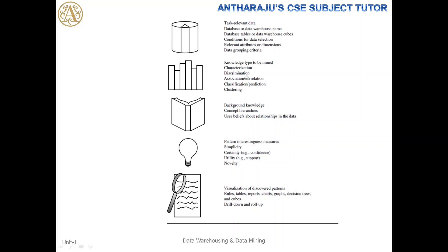Once task-relevant data is in place, the next primitive is knowledge to be mined — which sort of knowledge representation should be used, such as characterization, discrimination, association, or classification. Background knowledge provides a reference to the user and helps mine patterns based on previous experience. The interestingness measure defines how quality patterns are produced, using the two categories: confidence and support. These will be explained in more depth in coming lectures.